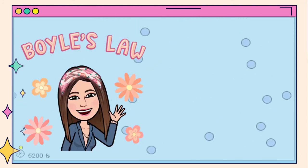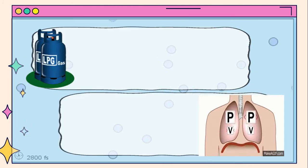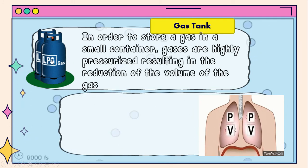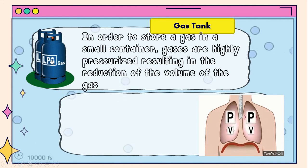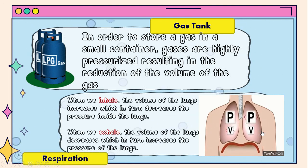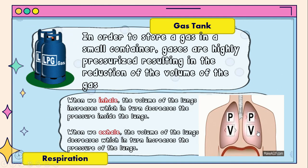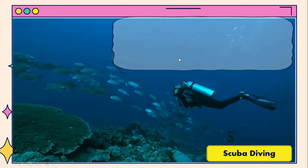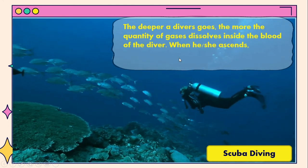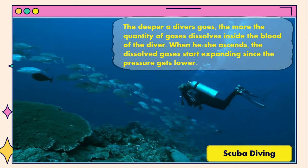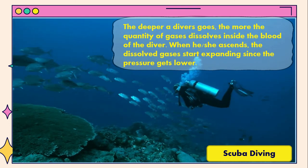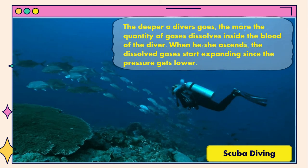Let us proceed with the real-life applications of Boyle's Law. The first is the LPG gas tank: in order to store gas in a small container, gases are highly pressurized, resulting in the reduction of the volume of the gas. The second is the respiration process: when we inhale, the volume of the lungs increases, which decreases the pressure inside the lungs; when we exhale, the volume decreases, which increases the pressure. And lastly, SCUBA diving: the deeper a diver goes, the more gas dissolves inside the blood. When ascending, the dissolved gases start expanding since the pressure gets lower.